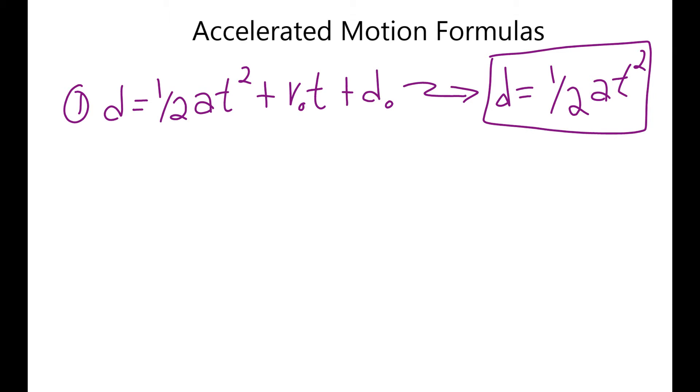Before doing this worksheet, we're going to talk about three different formulas that you may use. The first one is distance equals one-half acceleration times time squared plus your initial velocity times time plus your initial position. Now, usually you don't have to take that whole formula. You're just going to have to use distance equals one-half acceleration times time squared. But if they do give you an initial velocity and initial distance, you will have to use this original formula.